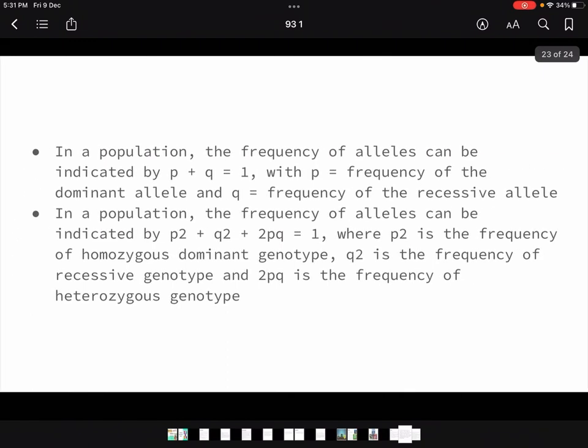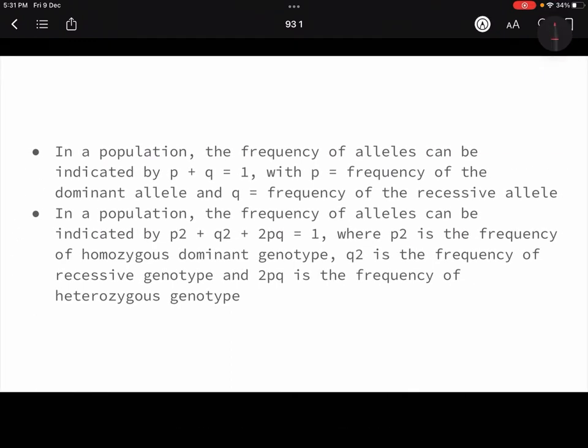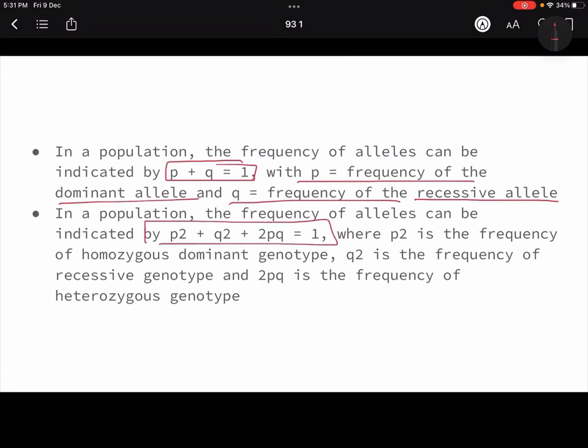And with this, I am going to tell you the formula also. Application we will see later. Let us see the formula first. So what happens is, in a population, there are alleles, different alleles, and that frequency is indicated by the formula P and Q, with P being the frequency of the dominant allele and Q being the frequency of recessive allele.